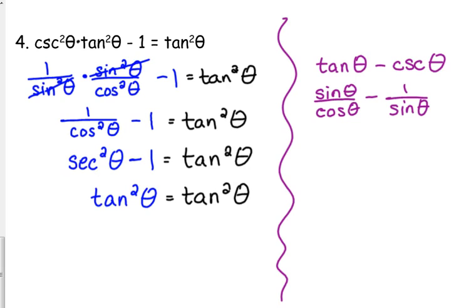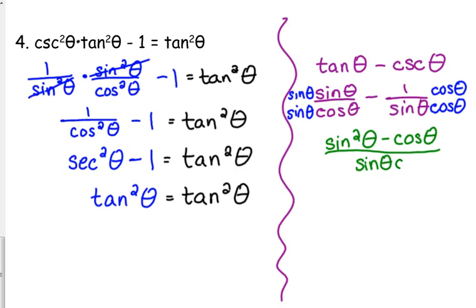Do y'all remember how to do common denominators with regular numbers? The same thing applies when you've got expressions like this. So we need to multiply this first one, top and bottom, by sine, because that's the denominator of the other one. We need to multiply this one, top and bottom, by cosine. So we end up with sine times sine is sine squared, minus one times cosine is cosine. And that's over the denominator sine theta, cosine theta. Now they have the same denominator.